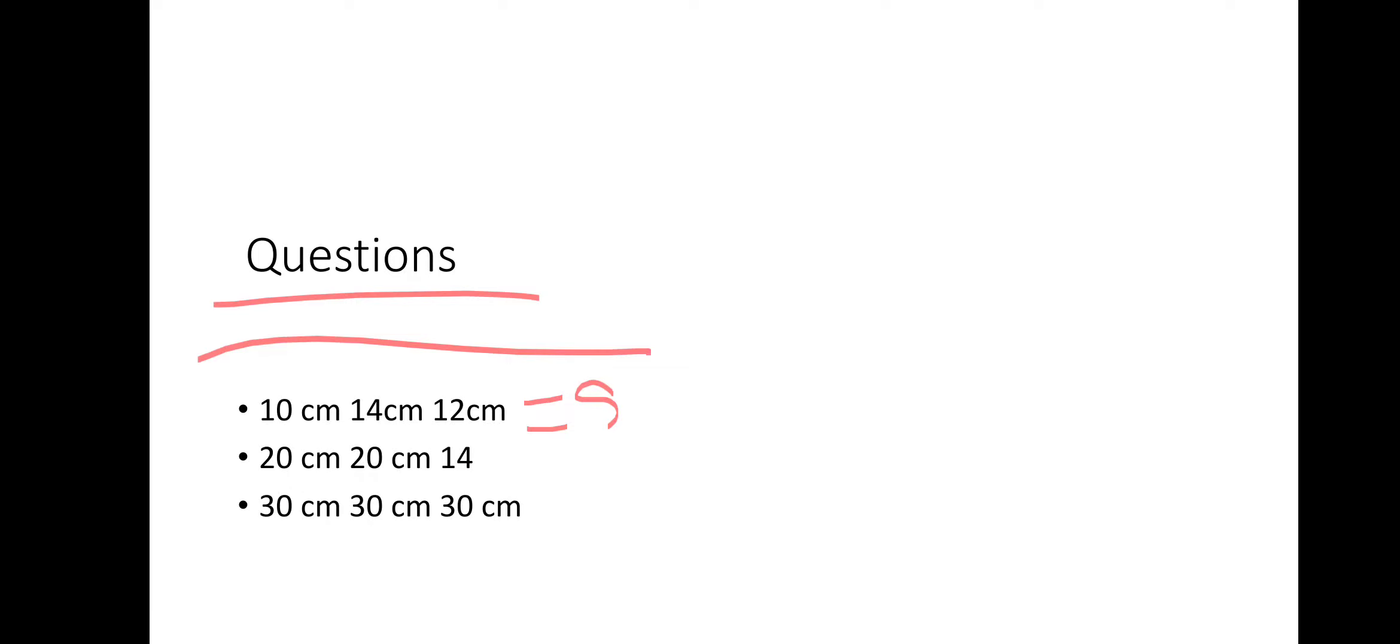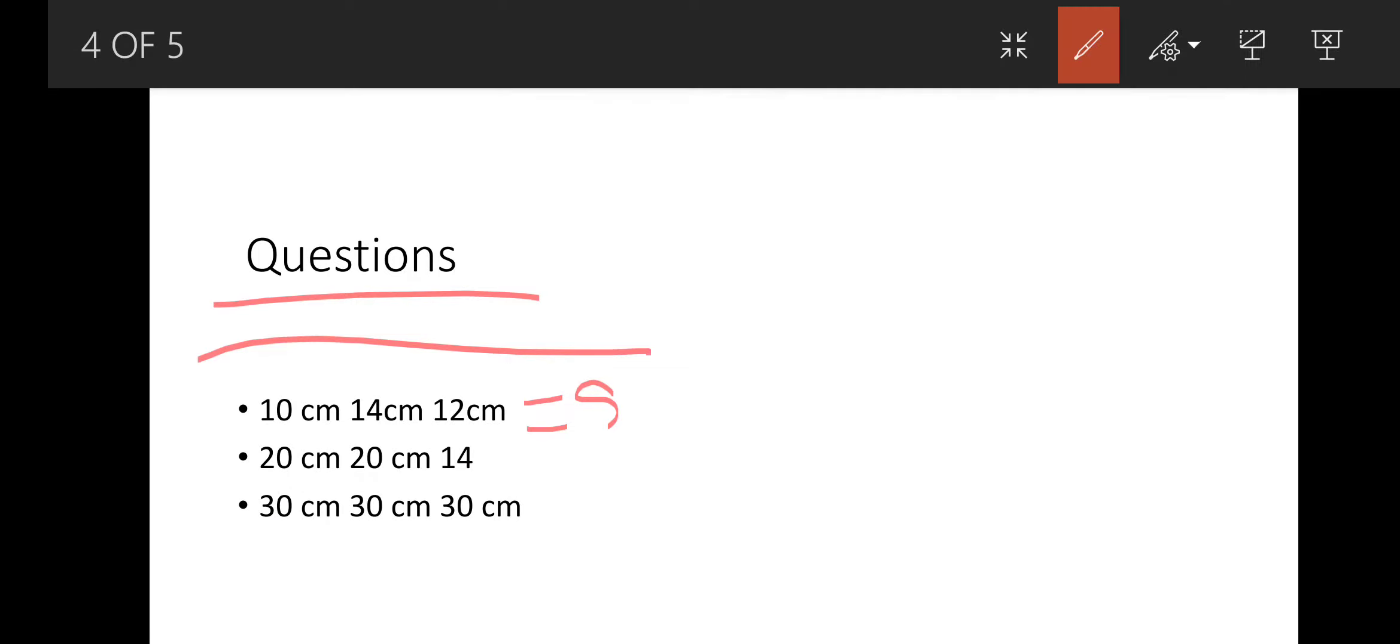20, 20, and 14, so it is equilateral. Sorry, it is isosceles. And 30, 30, 30 is equilateral triangle.